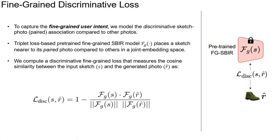We model the discriminative sketch-photo association to reflect fine-grained user intent in the output space. A triplet loss-based pre-trained fine-grained SBIR model places a sketch nearer to its paired photo compared to others in the joint embedding space. We compute a discriminative fine-grained loss that measures the cosine similarity between the input sketch and the generated photo.